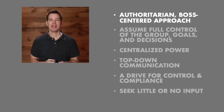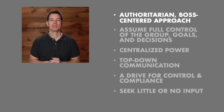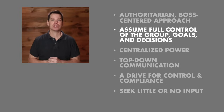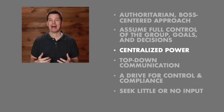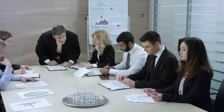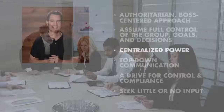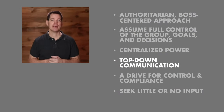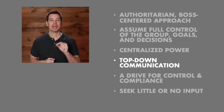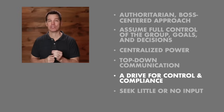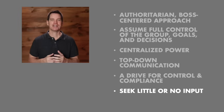A basic description of the autocratic style: it is an authoritarian, boss-centered approach. These leaders assume full control of the group, the goals, and the decisions — centralizing decision-making and power. Some researchers describe this as an absolute control approach over the entire operation. When it comes to communication, it's no surprise they have a top-down approach and dictate instructions, policies, and activities to the group, expecting followers to comply. It's a control-compliance relationship. These leaders take little or no input from group members.